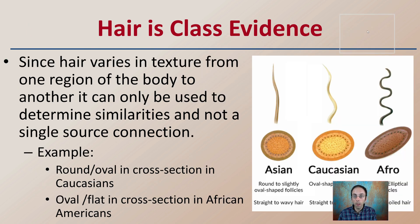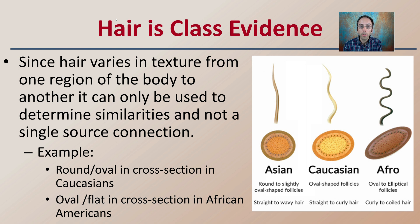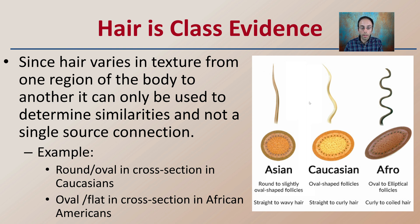Keep in mind that hair varies in texture from one region of the body to another and can only be used to determine similarities, not a single-source connection. Therefore, hair falls under the category of class evidence. For example, the round or oval cross-section of hair: Caucasians tend to have a rounder appearance, while an oval or flat cross-section tends to be more characteristic of African-Americans. But again, this is only class evidence and does not identify any one particular individual.